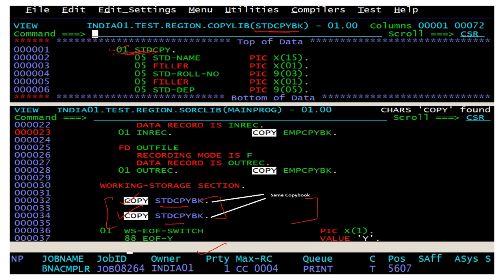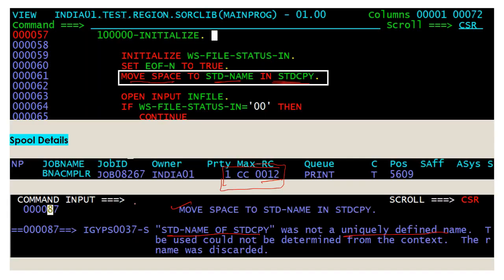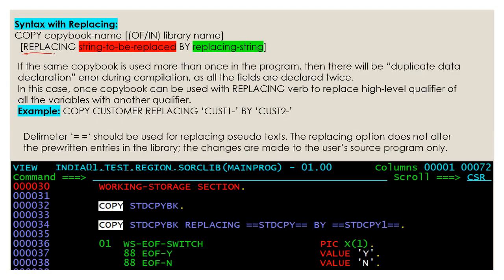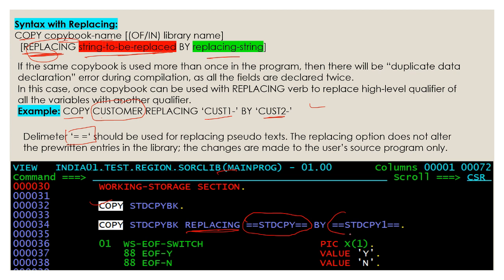To resolve this, there is a verb called REPLACING. The syntax is: COPY copybook-name REPLACING string-to-be-replaced BY replacement-string. For example, you can use a customer copybook and replace CUSTOMER-ONE by CUSTOMER-TWO. You can also use a delimiter for replacing some strings with another string.